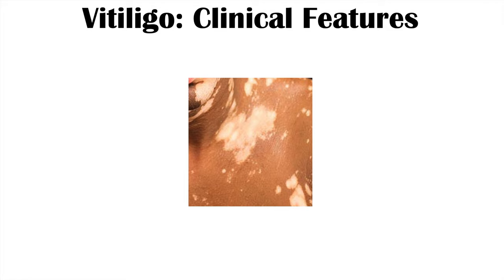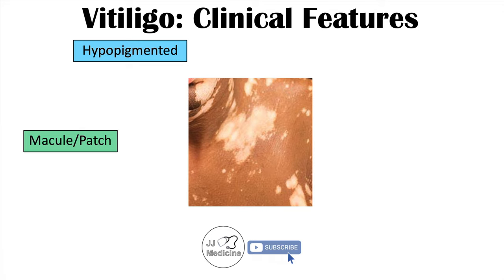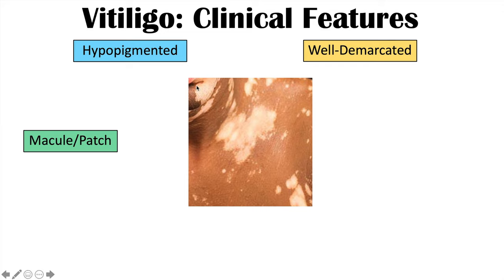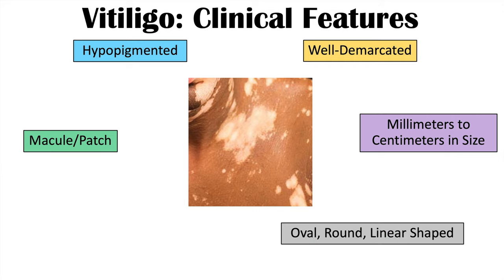The depigmented skin appears as a macule or a patch. A macule is a flat skin lesion less than 10 millimeters in diameter, while a patch is flat and greater than 10 millimeters. The skin is hypopigmented or depigmented, looking very light compared to surrounding skin. The lesions are well demarcated — the border between normal and depigmented skin is clearly defined. They can vary in size from millimeters to centimeters, with no particular shape — oval, round, or linear. In some cases, the lesions can be pruritic.